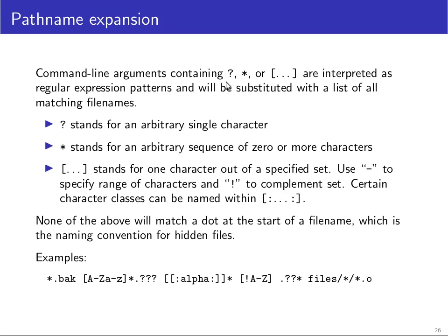If a command line argument contains a question mark, a star or square brackets, then these are interpreted as a simple form of a regular expression pattern. And if there are any matching file names in the current working directory, then they will be substituted. The question mark stands for an arbitrary single character. The star stands for an arbitrary sequence of zero or more characters.